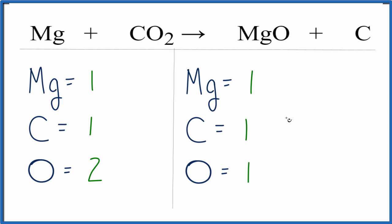So everything is balanced except the oxygen. Let's try to fix the oxygen. I could put a 2 in front of the MgO, and that would balance the oxygens. We have one oxygen here times the 2, that would equal 2.